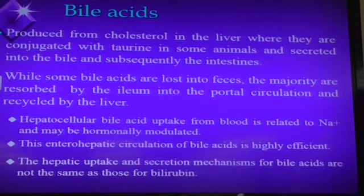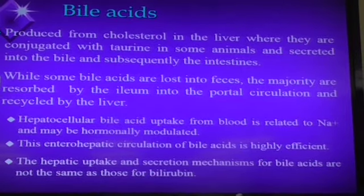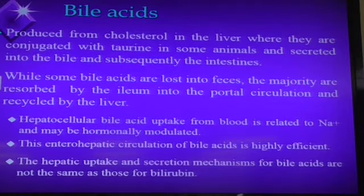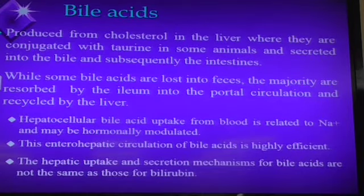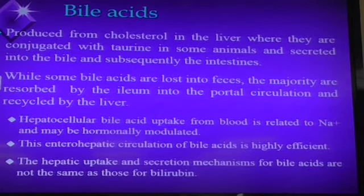Then the bile acids are reabsorbed in the ileum, get into the portal vein, and when the portal vein gets to the liver, the liver pulls almost 100% first-pass — because bile acids are kind of toxic; they emulsify fat and can break down cell membranes. So the liver wants to conserve and recycle them. Bile acids are one of the most sensitive ways to detect liver function problems — they'll usually detect damage when you have about 60% liver damage, a bit earlier than kidney tests.